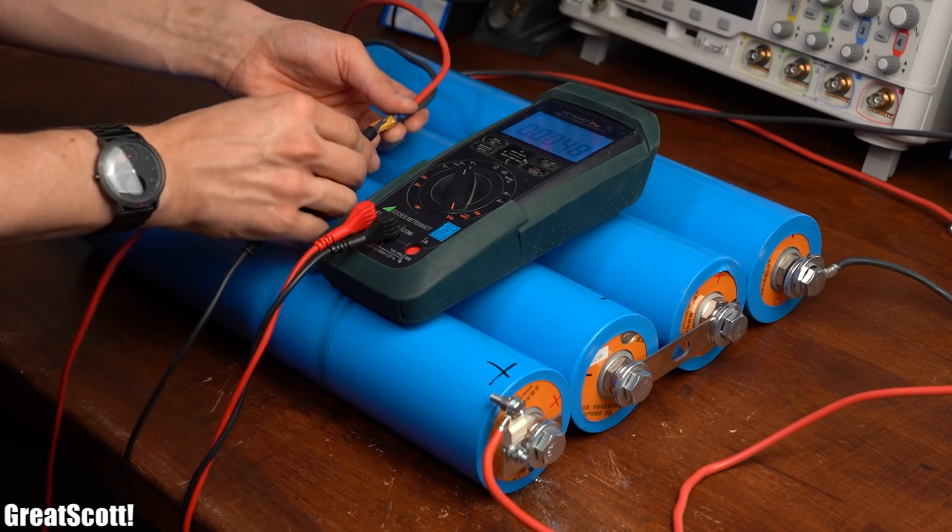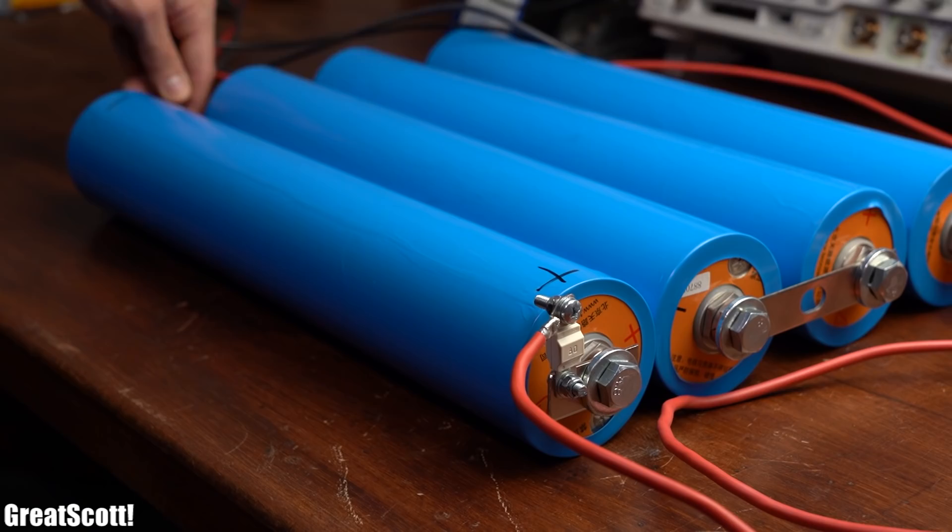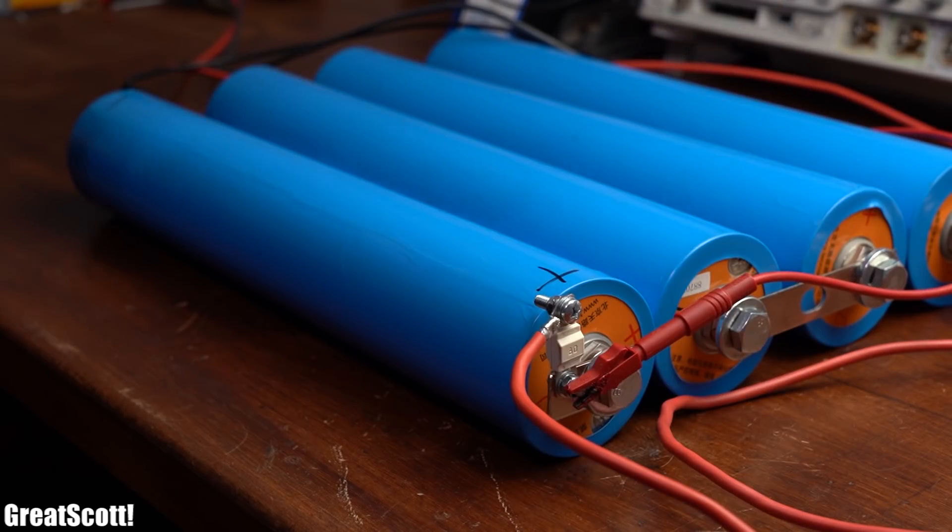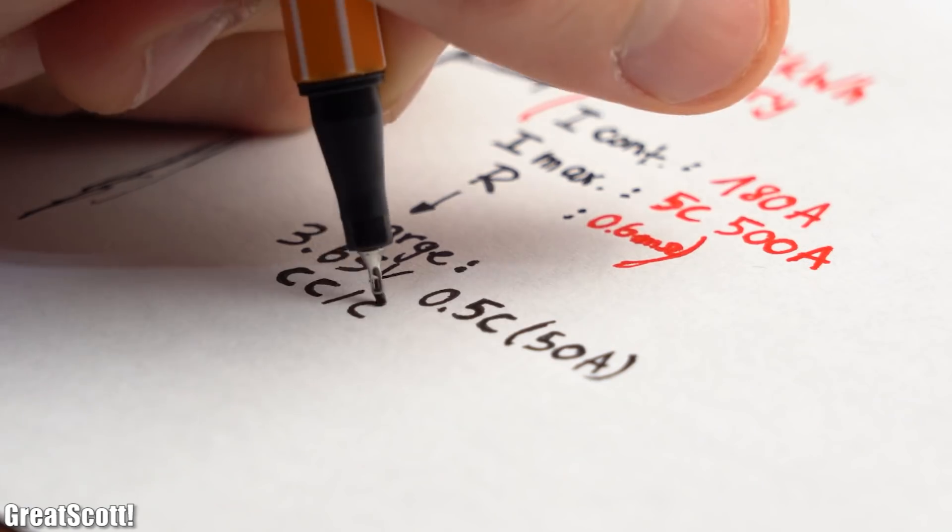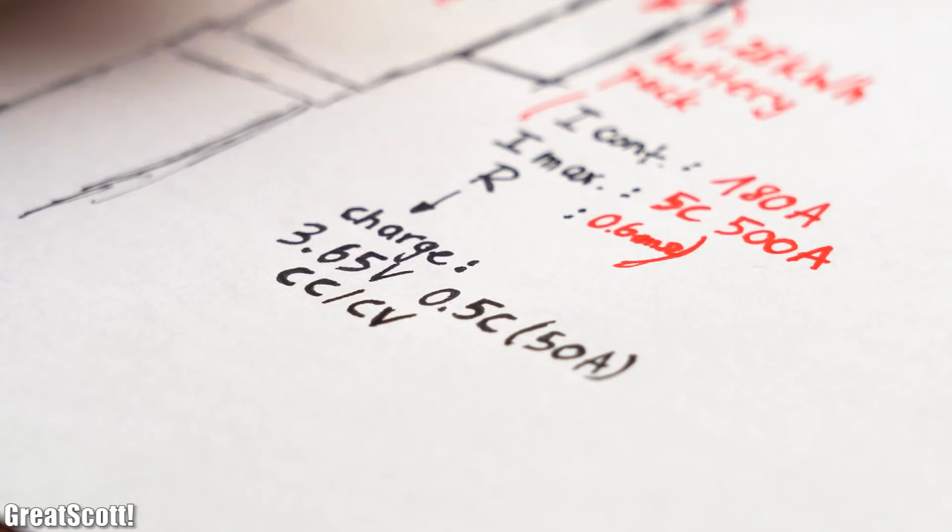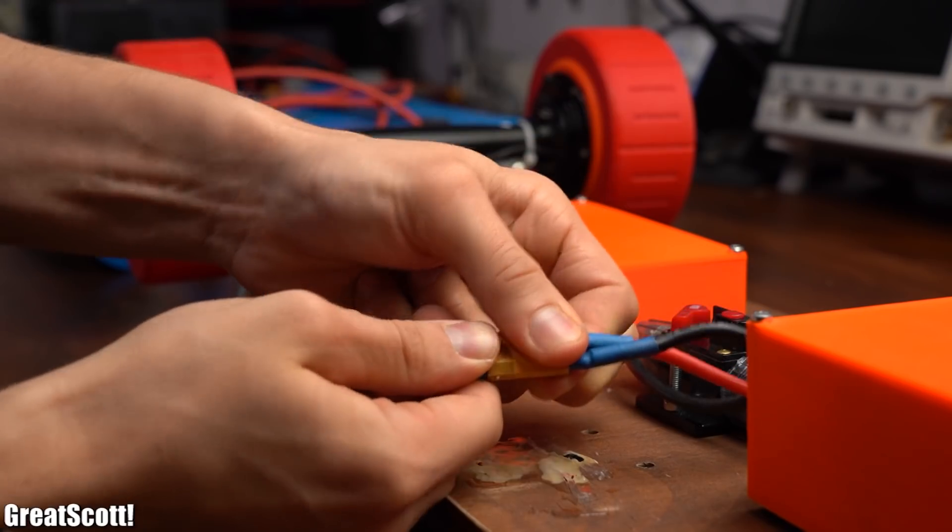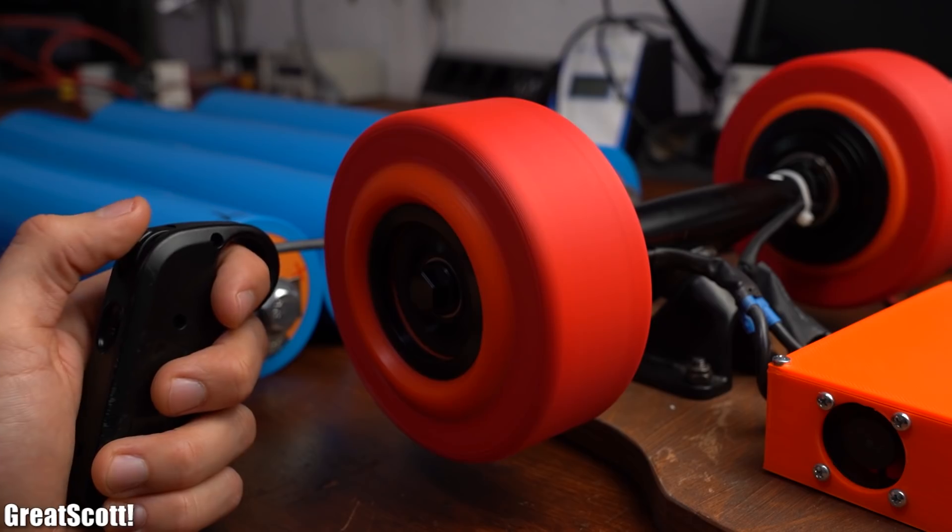And just like that our crude battery pack was basically complete. Of course I charged up each battery cell individually beforehand with a constant current constant voltage charging method, just like the information of the cell stated. So for first test I connected the battery pack to the longboard electronics and as you can see the wheels do rotate, but there is a problem we have to address.